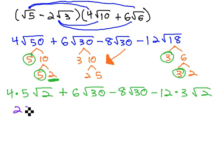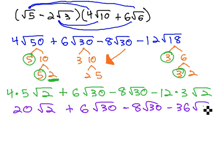Multiplying our coefficients together, we end up with 20 root 2, plus 6 root 30, minus 8 root 30, minus 36 root 2.